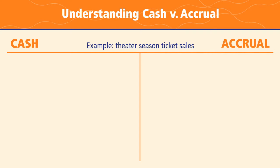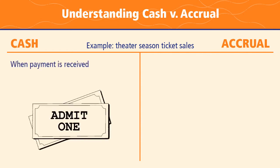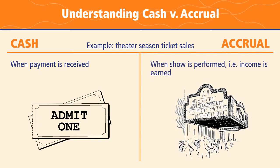Another example is theater season ticket sales. In the cash accounting system, you record that cash as soon as it's received — even though a patron may be buying tickets to shows months away, you record all that income right away when tickets are paid for. However, under the accrual system, you're going to book that income when the tickets are paid, but you're actually not going to show the cash as available until the show is performed — when the income is earned.